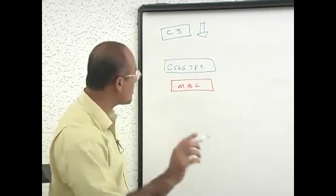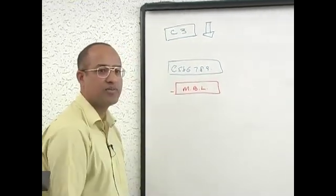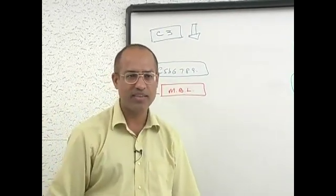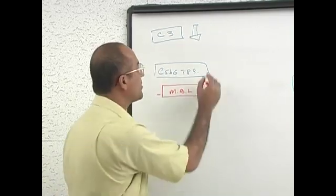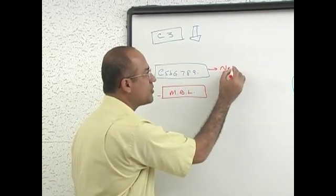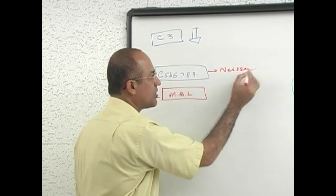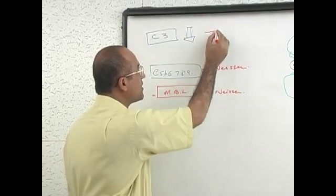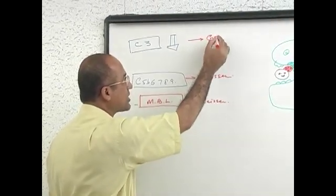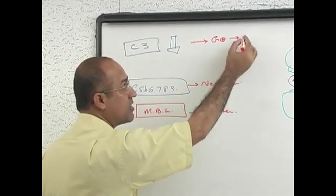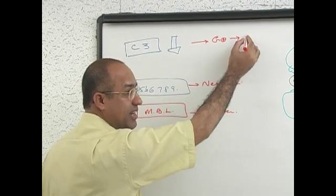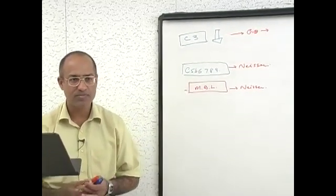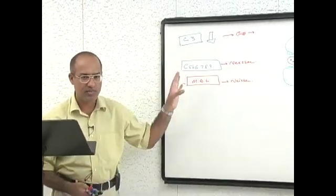So some people have deficiency of this thing and lectin pathway does not work. For some curious reasons, again Neisseria infections are more common in them. So here are Neisseria infections and here is also Neisseria infections. And what are the infections here? Gram positive especially staphylococcal aureus infection in paranasal sinuses and upper respiratory tract when there is deficiency of C3. So these three deficiencies are clear.